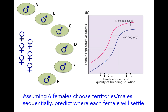The second female can choose to be the second polygynous female with A, or she can choose to be the first female to mate with B. Because the fitness payoff of being the first female with B is higher than it would be to be the second female with A, she should choose to be with B. The third female is where things get kind of interesting — she could choose to be monogamous with C, or she could choose to be the second polygynous female with male A.